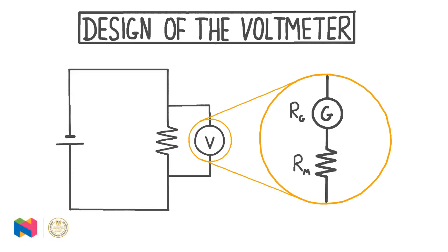In this video we're going to be looking at the design of the voltmeter, a device that we can use to measure the voltage, or potential difference, across a component in a circuit. In a circuit diagram we can represent a voltmeter with an uppercase V inside a circle, and in this circuit the voltmeter is being used to measure the voltage drop across this resistor.